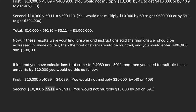Second, $10,000 x 0.5911 equals $5,911. You would not multiply $10,000 by 0.59 or 0.591.